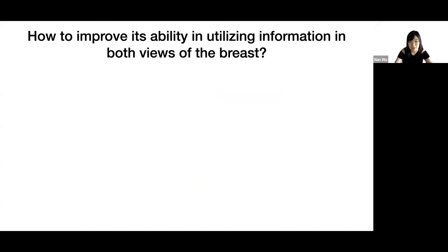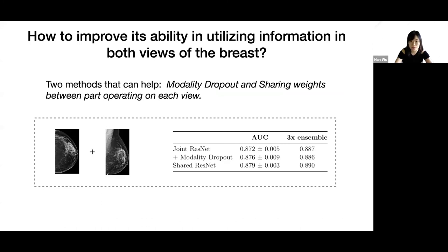Next, we evaluated a series of methods proposed in multi-view literature and investigated how to improve performance. We identified two methods that can help: one method named modality dropout, where modalities are sampled to be dropped out randomly, and another method of sharing weights between the parts of the model operating on each view. We showed that those two methods can achieve better performance than the baseline for the breast cancer screening task. We would like to highlight that it is still hard to utilize information from multiple views for medical diagnosis with deep neural networks. However, we propose that improving the training dynamic is a promising direction.